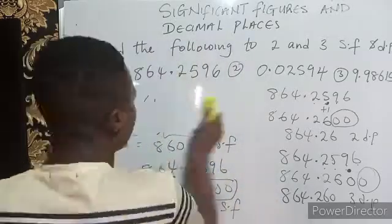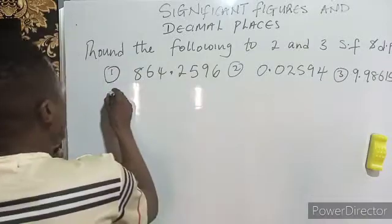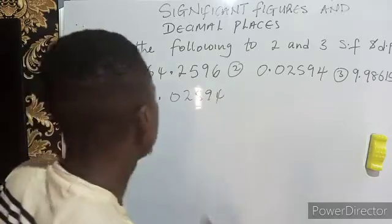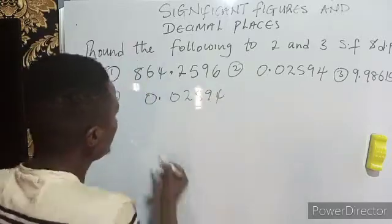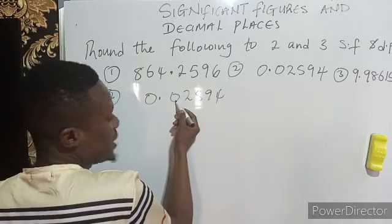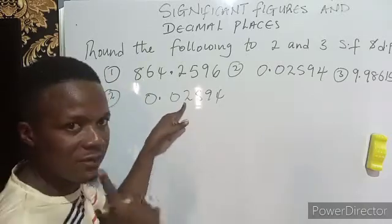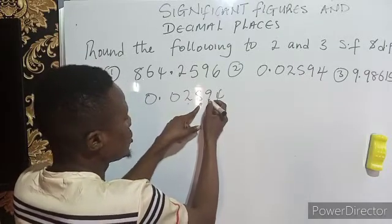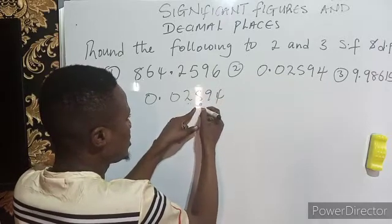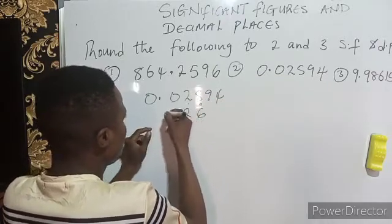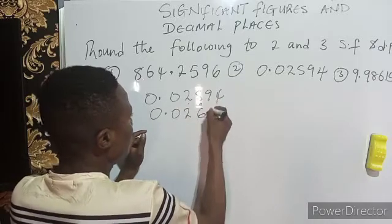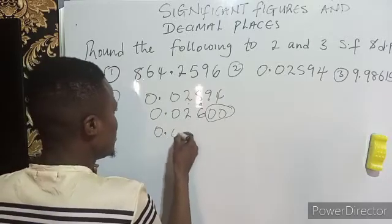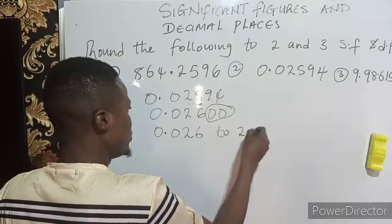Let's go to question number two. We have 0.02594. To put this number to two significant figures, I will not start counting from the leading zeros because they are insignificant — I will start counting from the first non-zero digit. You count one, two for two significant figures. This is your target; it is up to five, so you add one: five becomes six. You have 0.026 — every other number turns to zero, and zero is insignificant, so the answer is 0.026 to two significant figures.